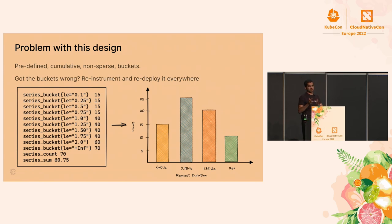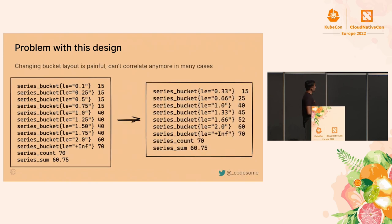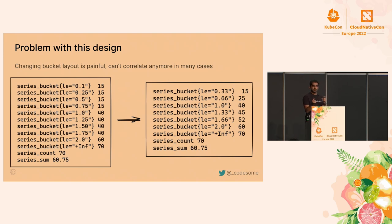If you got the bucket boundaries wrong and want to re-instrument, you have to re-instrument all the applications with new bucket boundaries and redeploy everywhere. This can also be a problem if you change boundaries in an incompatible way where the left and right buckets don't match — in Prometheus, labels need to match to do any comparison. So you may only be able to compare certain buckets, and will have to wait until all new buckets are ready.